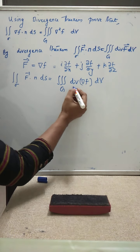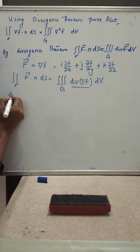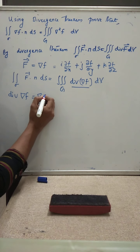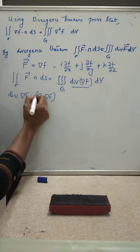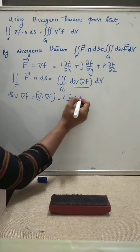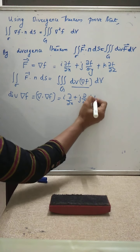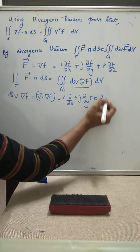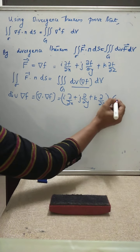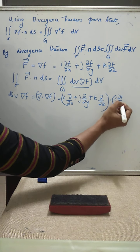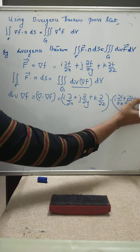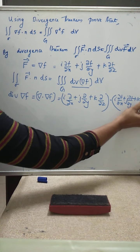Now we find the value of div of del f. That is, divergence of del f means del dot del f. Del is i ∂/∂x plus j ∂/∂y plus k ∂/∂z, dotted with del f which is i ∂f/∂x plus j ∂f/∂y plus k ∂f/∂z.